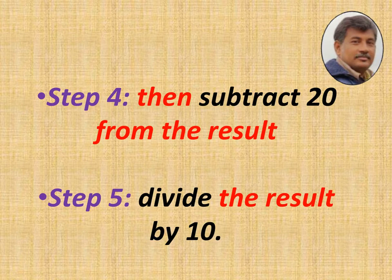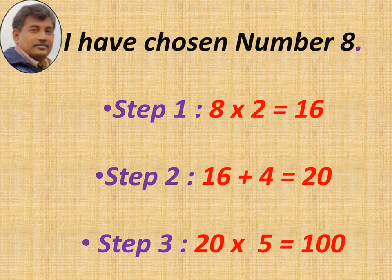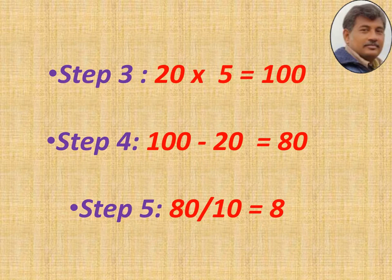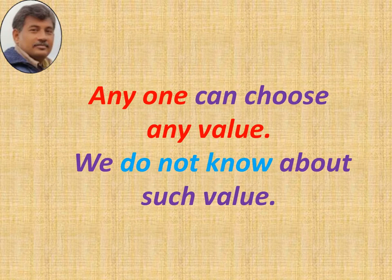Here I have chosen the number 8. Step one: 8 multiplied by 2 equals 16. Step two, add 4: gives 20. Step three, multiply by 5: we get 100. Step four, subtract 20: gives 80. Step five, divide by 10: we get 8. That is the same number I started with.